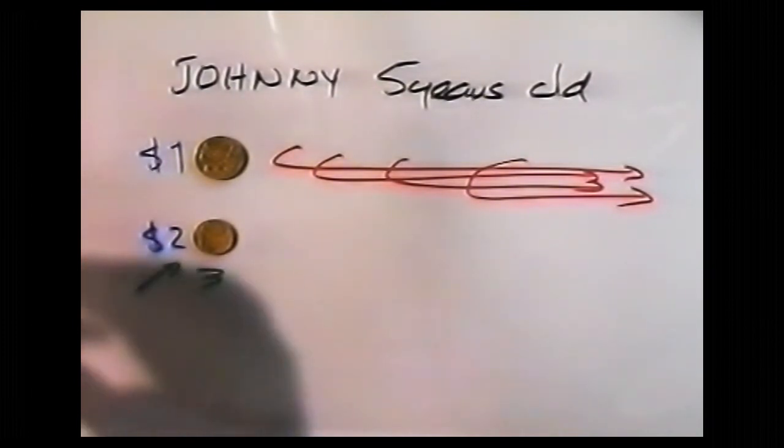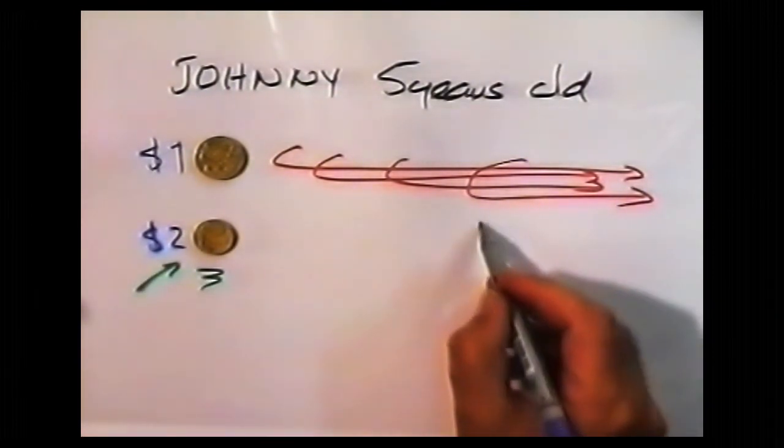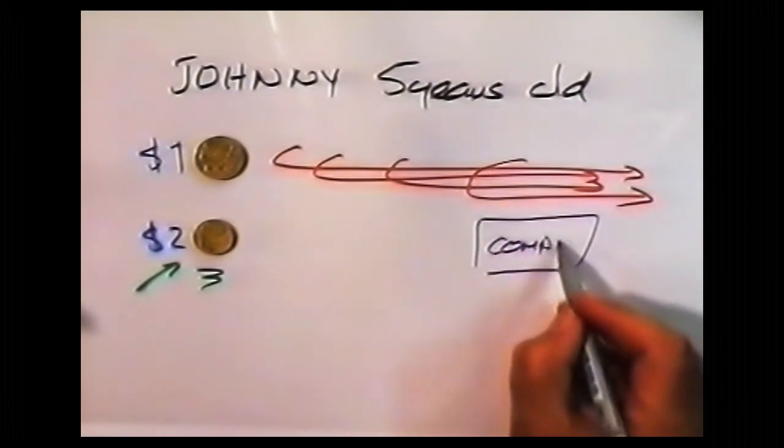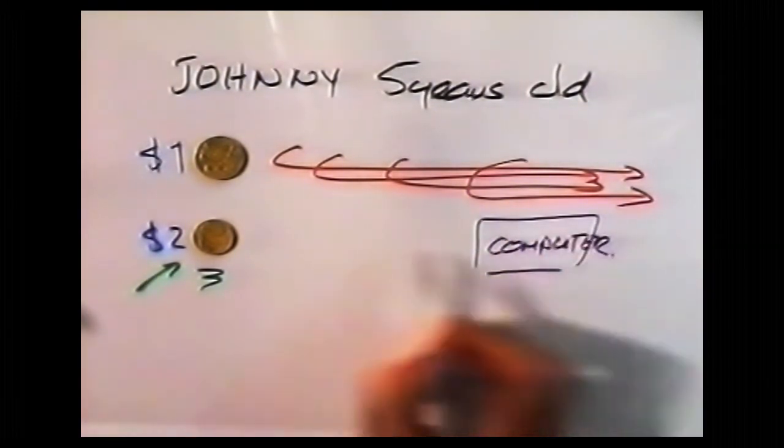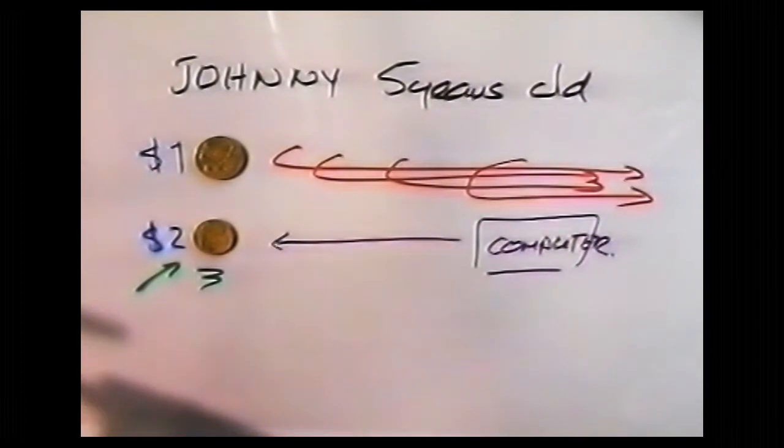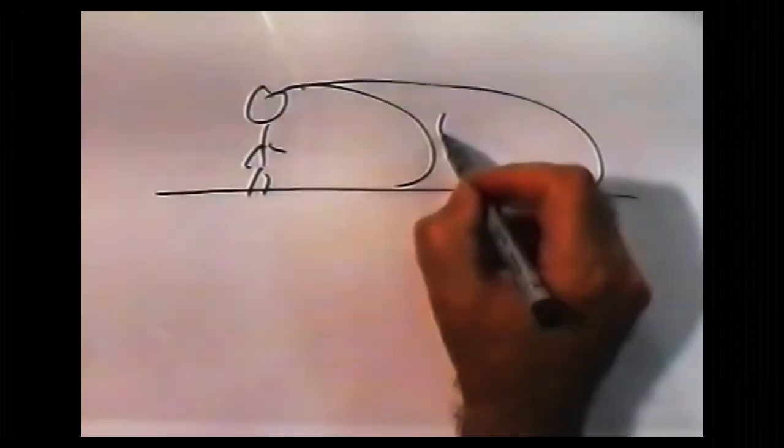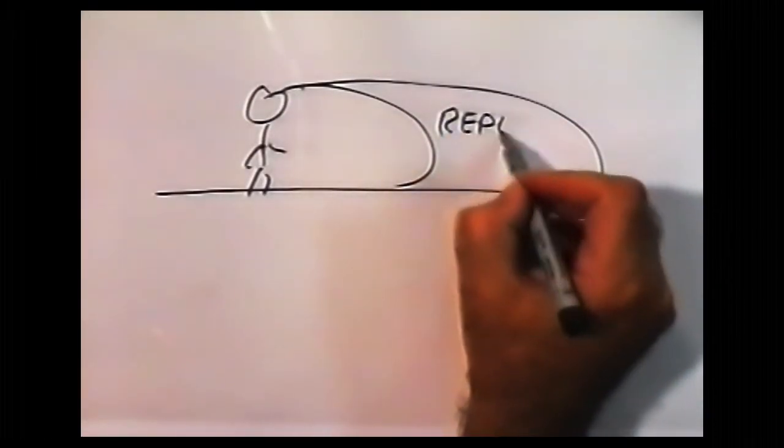Now, the point of that story is exactly that, that if you had a computer programmed for value, the computer would have had to take the two dollars the first time. It's Johnny's human perception, which allowed him to take a bigger view of the future and the possibility of repeat business.